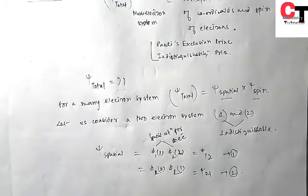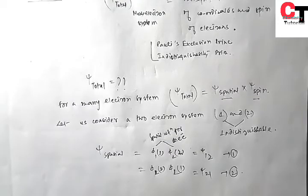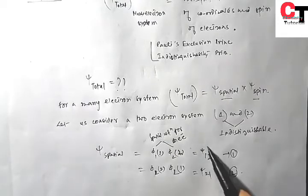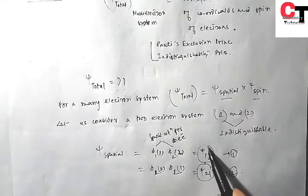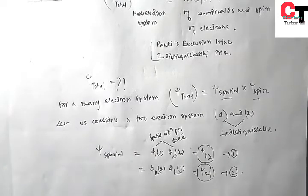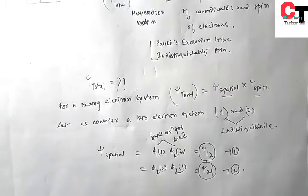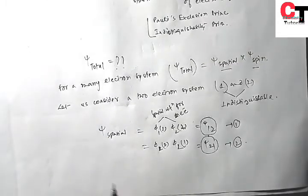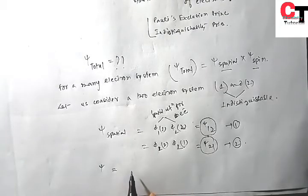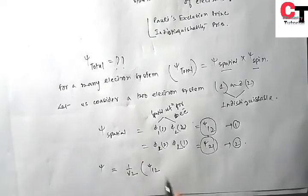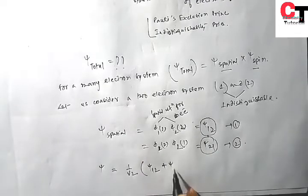Since both the electrons are indistinguishable, the total spatial wave function — since both electrons are indistinguishable — the spatial wave function for the Schrödinger equation of the system will be a linear combination of these two functions. That is, we need to consider the linear combination of these two functions in order to write the total spatial wave function of the system. If we consider Psi, the total wave function, this will be the normalization constant times the linear combination of Psi(1,2) plus Psi(2,1).